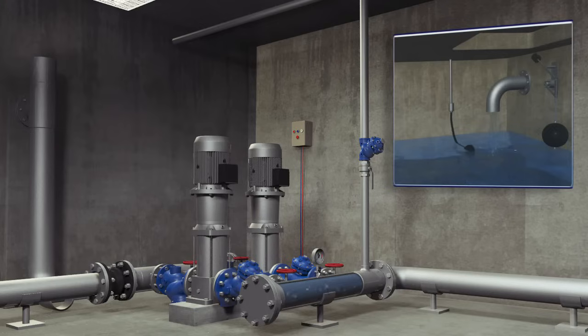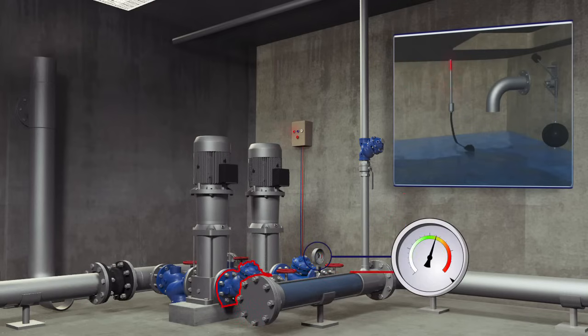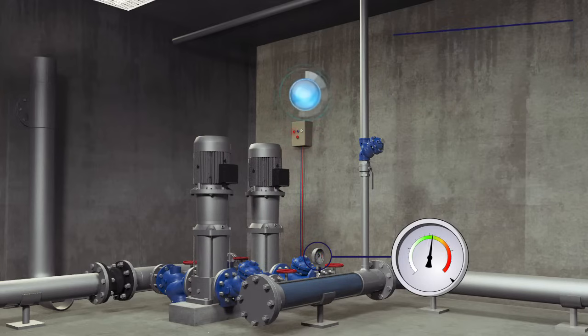When the top reservoir is full, the electrical float sends a stop command to the Burmad active check valve, which is installed downstream of the lift pump. This valve cuts off the water flow, doing so gradually to eliminate any surge or water hammer.